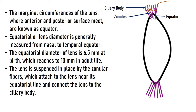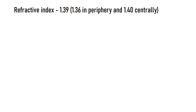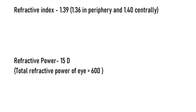The lens is suspended by zonular fibers, also known as suspensory ligaments, which attach at the equator and connect the lens to the ciliary body. The refractive index of the lens is 1.39. The lens has a graded refractive index — about 1.4 at the center and about 1.36 at the periphery. The total refractive power of the eye is about 60 diopters, and the lens contributes about 15 diopters, with the remainder contributed by the cornea.